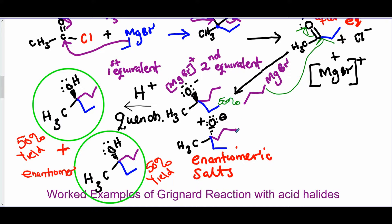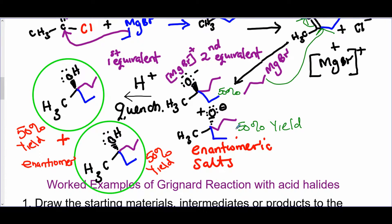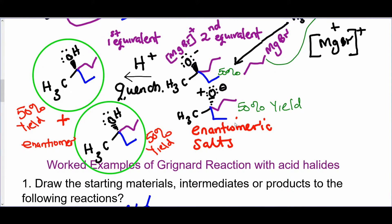as a racemic mixture, so 50% chance for making that, and 50% chance for making that. This will be 0.5 grams. This will be 0.5. No preference for either. So these are enantiomers, because one is R and the other one is S configuration.